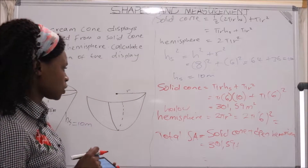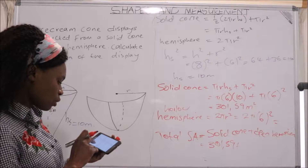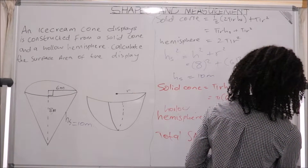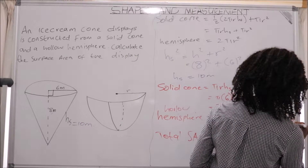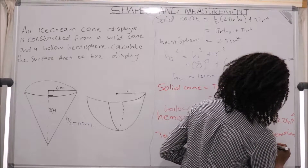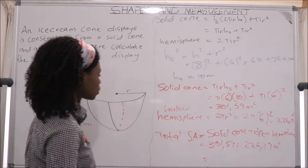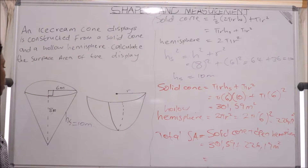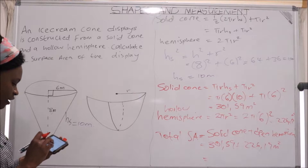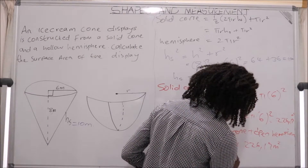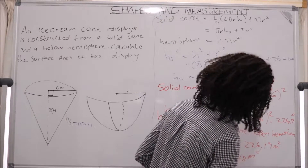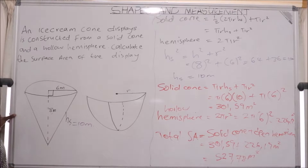For the open hemisphere: 2π × 36 = 226.19 m². Adding the two results: 301.59 + 226.19 = 527.78 m². This is the total surface area of the display shown in the question.